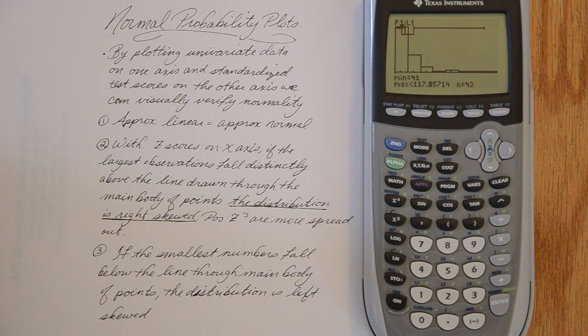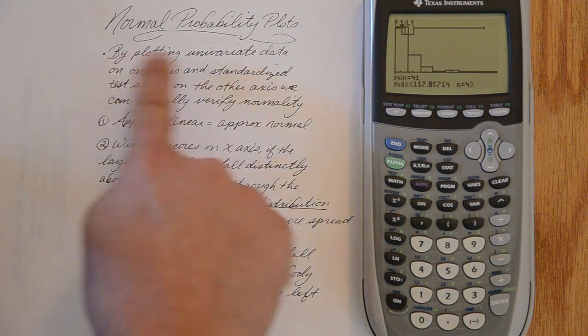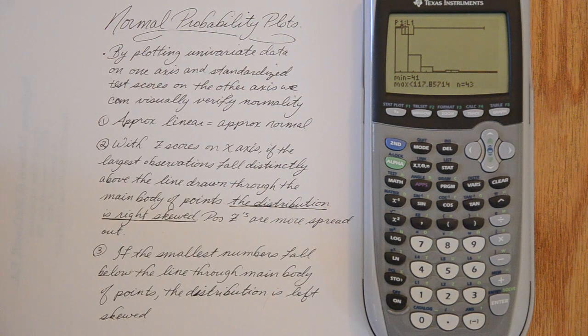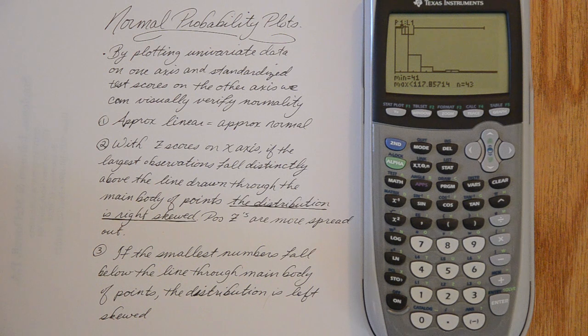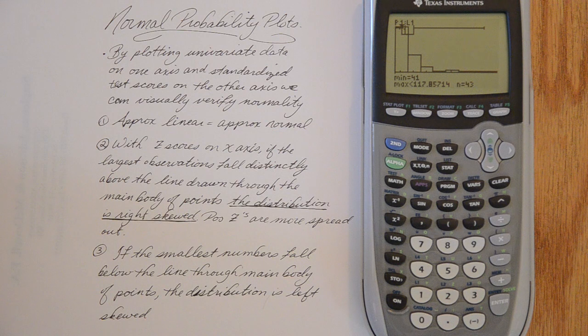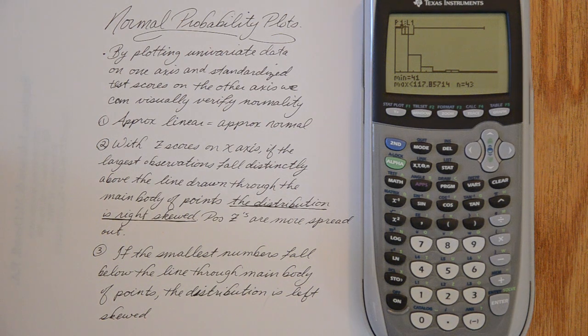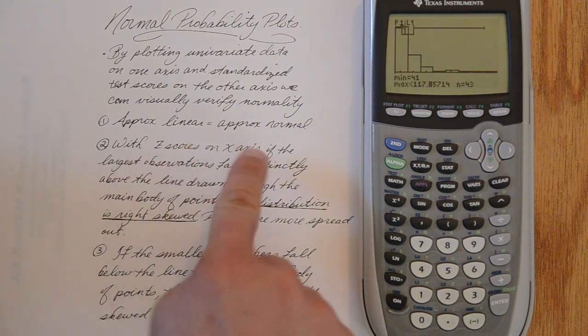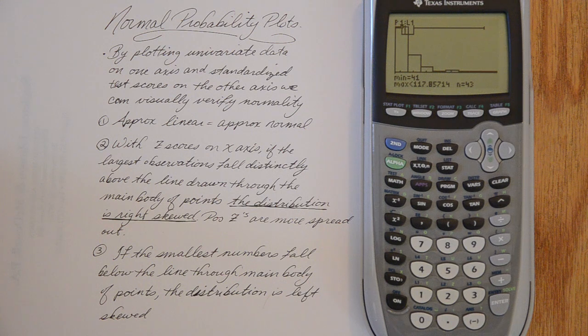Let's see how the skewness shows up in a normal probability plot. Well, what is a normal probability plot? We are going to plot the original data on one axis and the standardized test scores on the other axis. In this case it will be z-scores. If we see an approximately linear pattern, that is going to be normality.